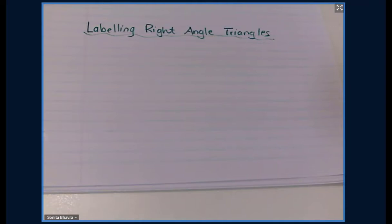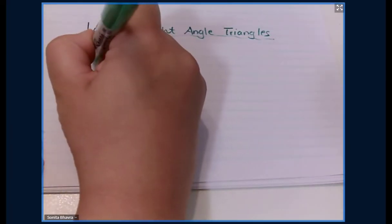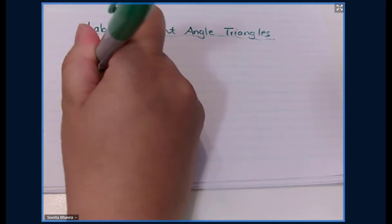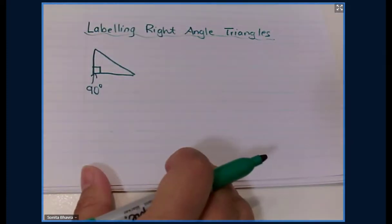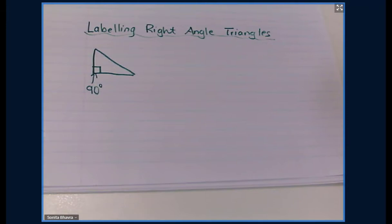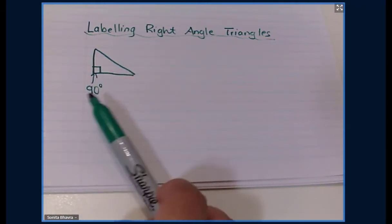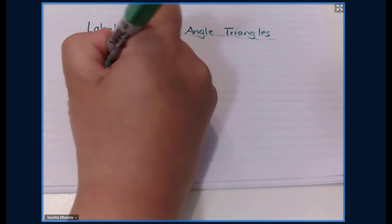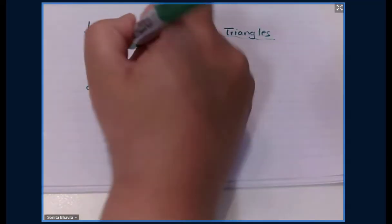Next we're looking at labeling right-angled triangles. A right-angle triangle is a triangle that has a right angle, represented by a little square. That little square means that angle is 90 degrees. When you have a right-angle triangle, there's a special name for the side opposite the right angle — that is called the hypotenuse.